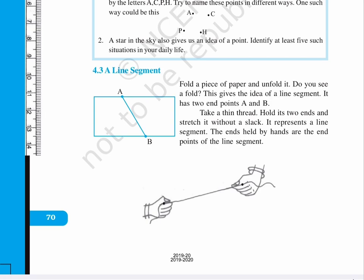Take a thin thread, hold its two ends and stretch it without a slack. It represents a line segment. The ends held by hands are the endpoints of the line segment.